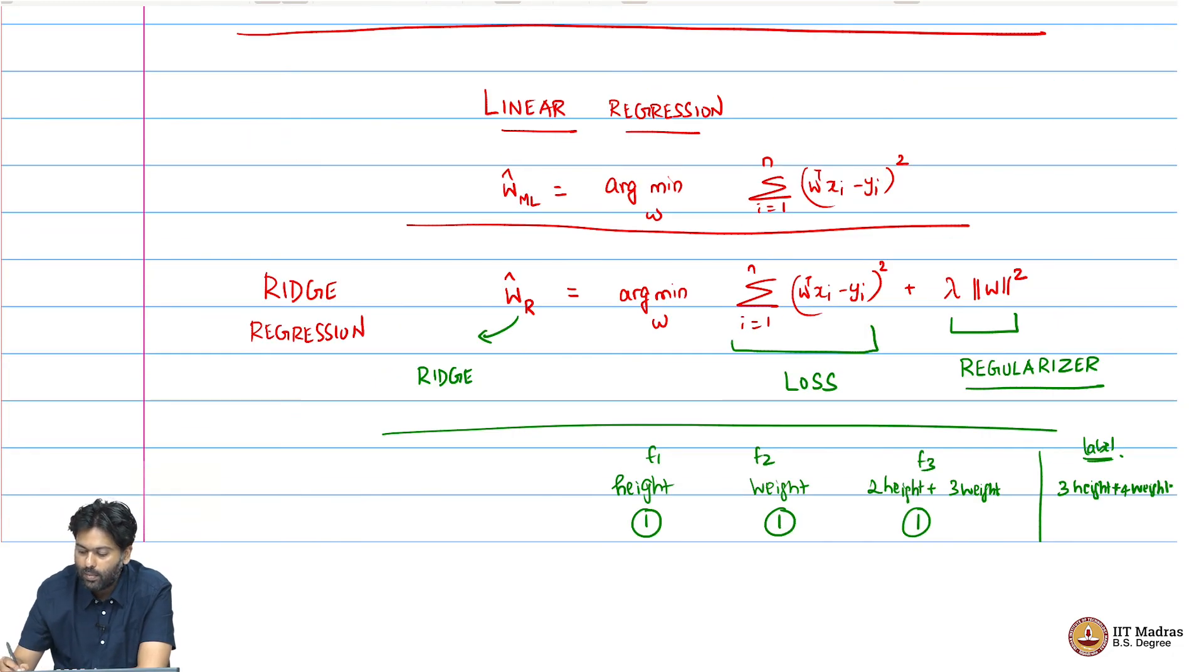What is this lambda doing? Lambda is something like 1 by gamma squared where gamma squared was the variance. If you have a very strong belief that most of the features are redundant, meaning all there are several w's with close to 0 values, then we would have a very small variance. Gamma squared would be very small, the variance is small which means most mass is concentrated around 0 according to our prior.